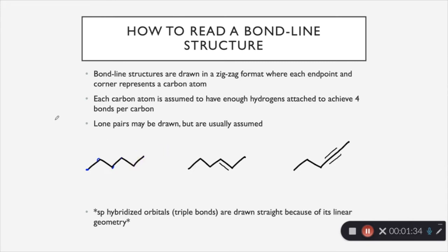Each carbon atom is assumed to have enough hydrogens to achieve 4 bonds per carbon. So for example, if we look at this carbon right here, we know that it is connected to another carbon, so that would be 1 bond. So we know that it's going to have 3 hydrogens attached because it needs to achieve its 4 bonds.